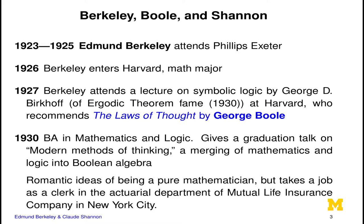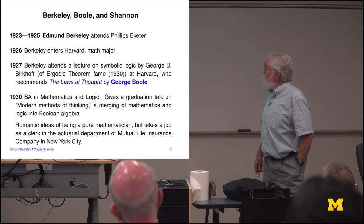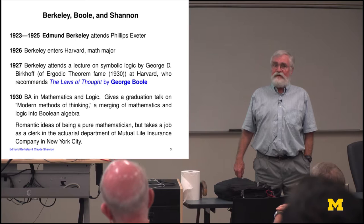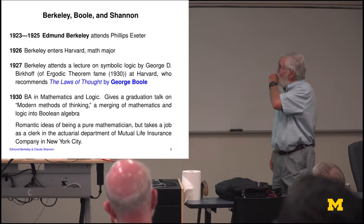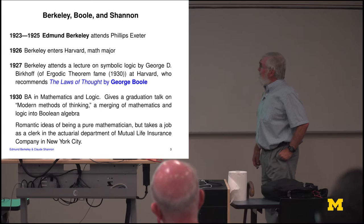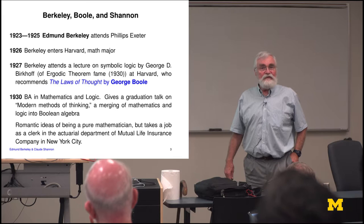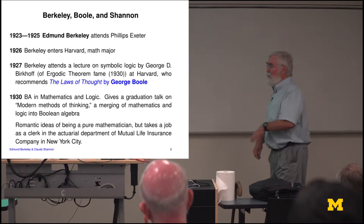The main point is he went to Harvard in the 1920s, where he took a class on symbolic logic taught by George Birkhoff — not Garrett, who is his son and much more famous in recent times, but George, who was the prover, along with Kenshin, of the ergodic theorem. So he was involved in both probability and symbolic logic, an interesting combination. Birkhoff recommended that Berkeley read Boole's book, and Berkeley was blown away by it because he thought this was a mathematical theory of logic that could improve the way people thought about everything — not just mathematics but politics, social studies, and everything.